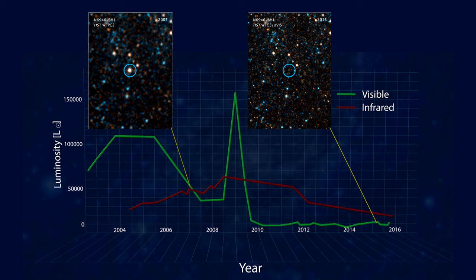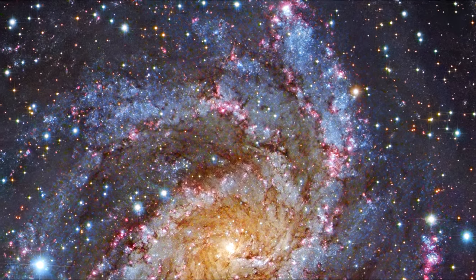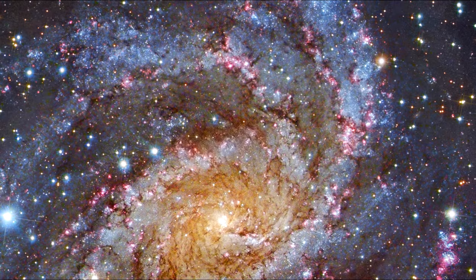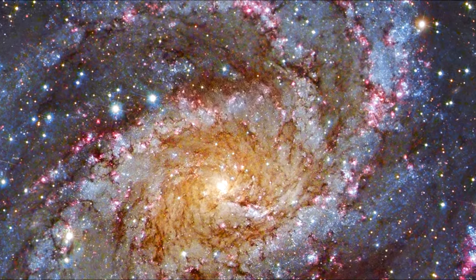The researchers eventually concluded that the star must have become a black hole without a supernova. It has been estimated that up to 30% of all massive stars form black holes this way, with the remaining 70% taking the supernova path.